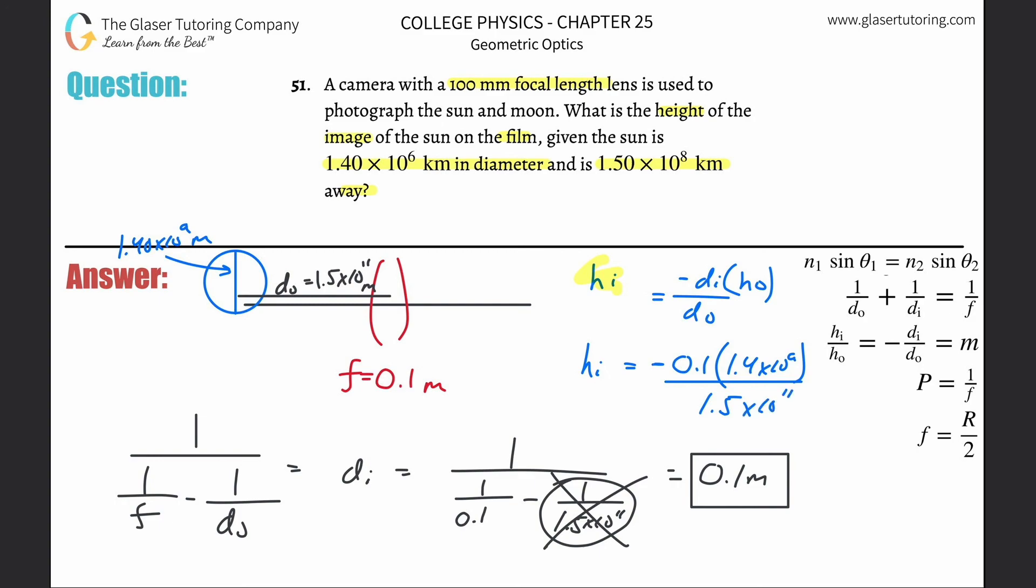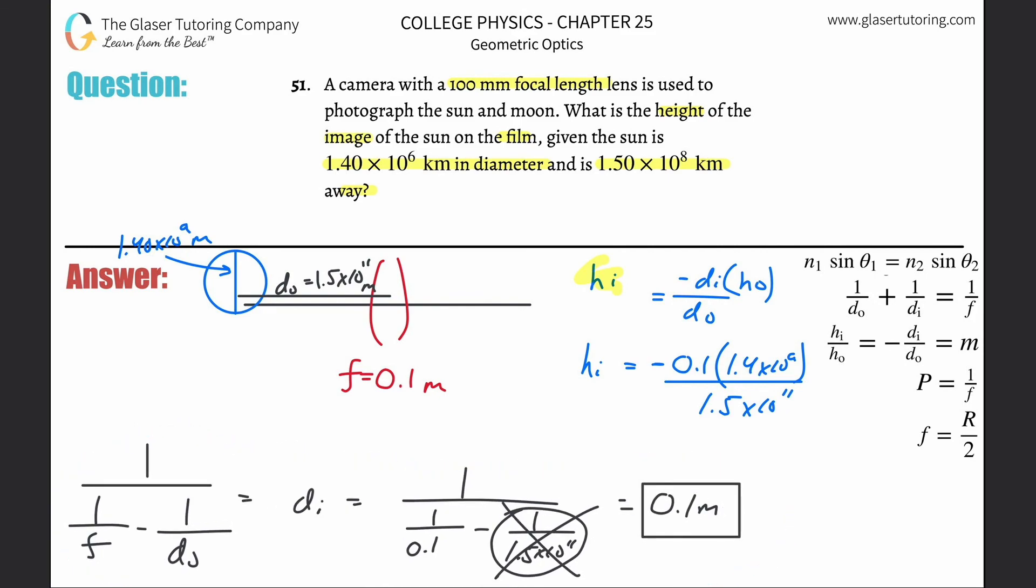If you have an infinitely far thing away, you might not even need to bother solving for di because you know that di is basically just going to equal the focal length. So that might have saved you time. But if you're not sure, you can always rely back on the calculations.